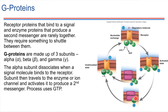Once the G protein subunits have done their job, they come back together — they slide back together, reconnect, and are now hanging out with the receptor protein again. We'll elaborate on this in more detail in future chapters. For right now, just getting the general concept of G proteins as a means of initiating second messenger systems is the key point in the general context of cell signaling.